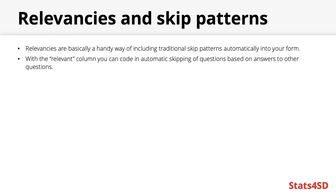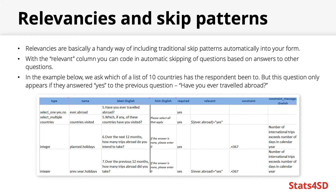Relevancies are another important part of form logic. They are basically a handy way of including traditional skip patterns automatically into your form. With a paper form, skip patterns would have to be done manually and would easily be open to human error. However, with the relevant column, you can code in skip patterns that will occur automatically based on answers to other questions. In this example, we ask which of a list of ten countries the respondent has ever visited, but naturally we would only want this question to appear to respondents who have definitely ever been abroad, since otherwise the answer is going to be none.